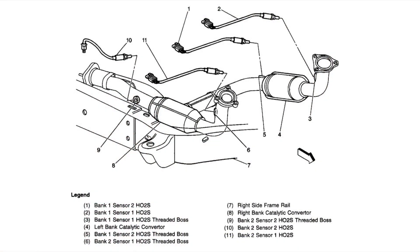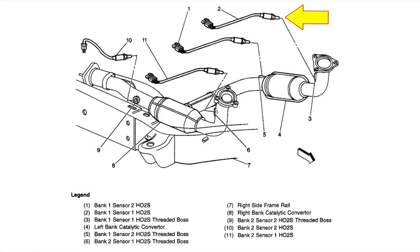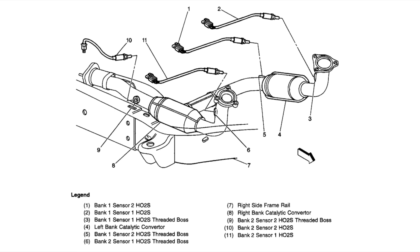Here's the vehicle we've got today. Here's the left and the right catalytic converters, and here's bank 1 sensor 1, bank 1 sensor 2, bank 2 sensor 1, and bank 2 sensor 2. The scan tool is giving us a P0161, telling us that bank 2 sensor 2 is the bad one.